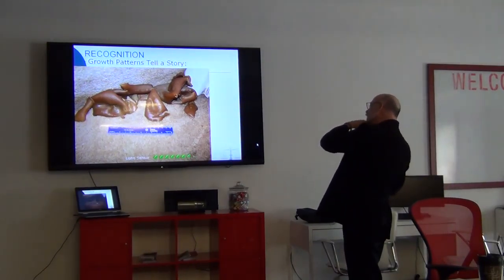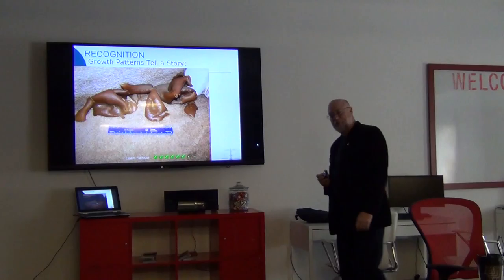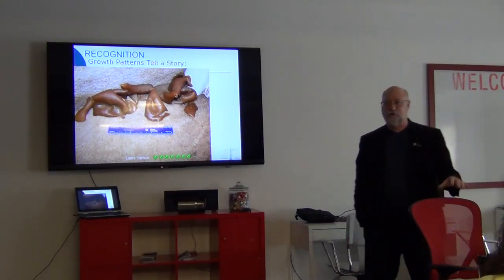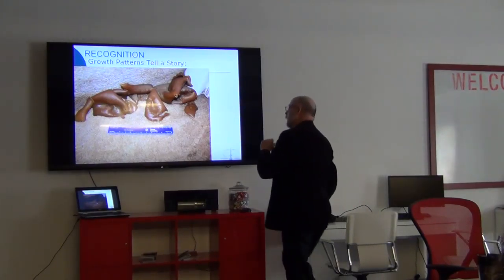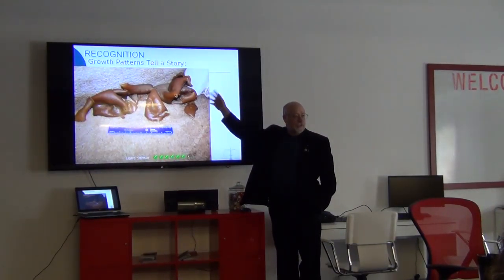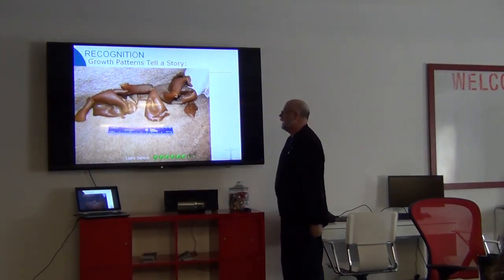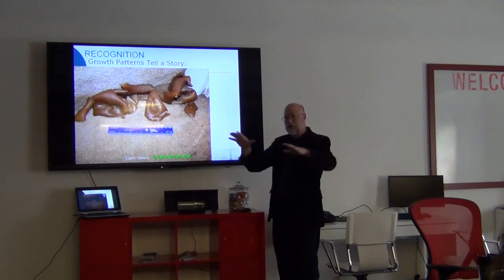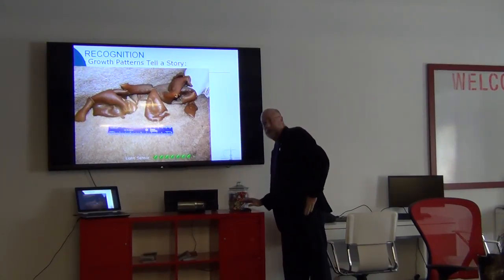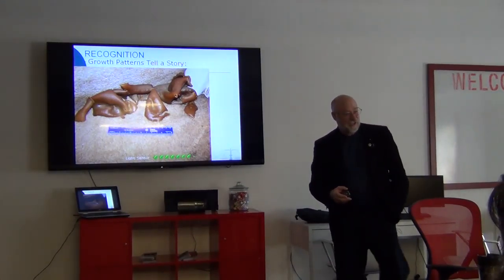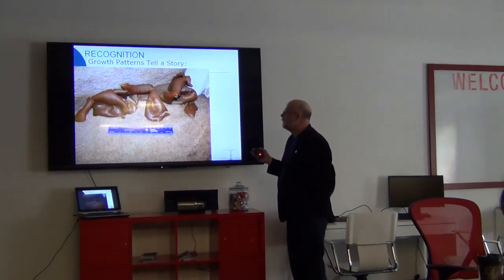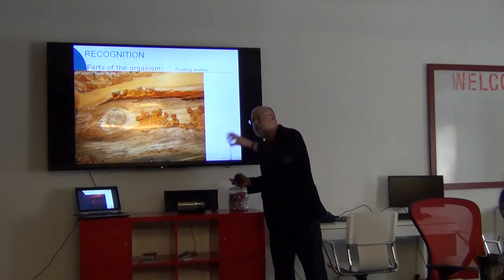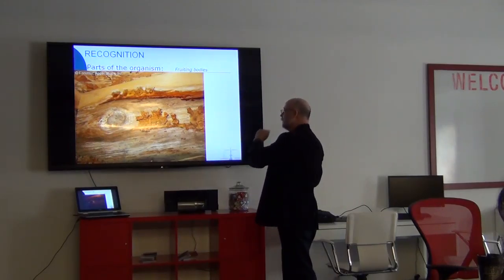This organism is called Peziza domicilia — also known as the common indoor mushroom. We've seen it growing in houses and even cars. In Colorado it commonly appears in crawl spaces or where water comes up through carpet. They can range from tiny to quite large. They're not poisonous — you could actually eat them. This is what's called a fruiting body: the visible, above-surface part of the fungal organism.